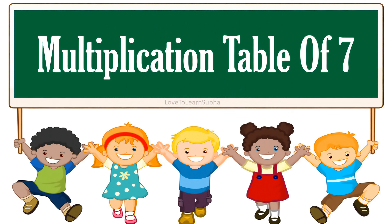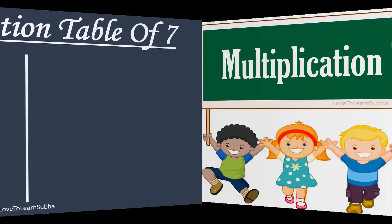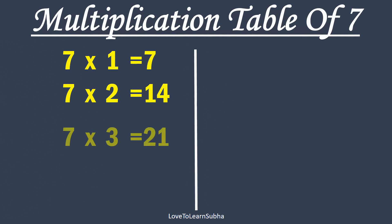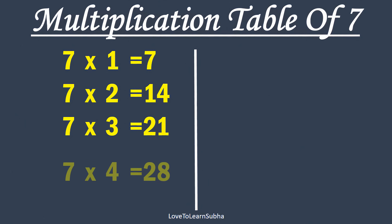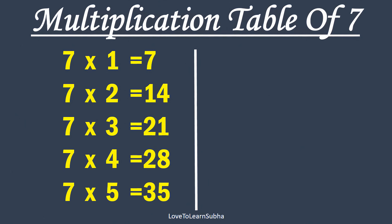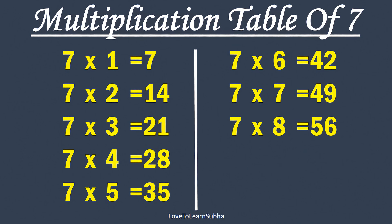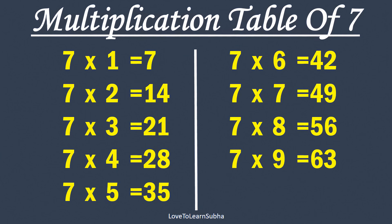Multiplication table of 7. 7×1 is 7, 7×2 is 14, 7×3 is 21, 7×4 is 28, 7×5 is 35, 7×6 is 42, 7×7 is 49, 7×8 is 56, 7×9 is 63, 7×10 is 70.